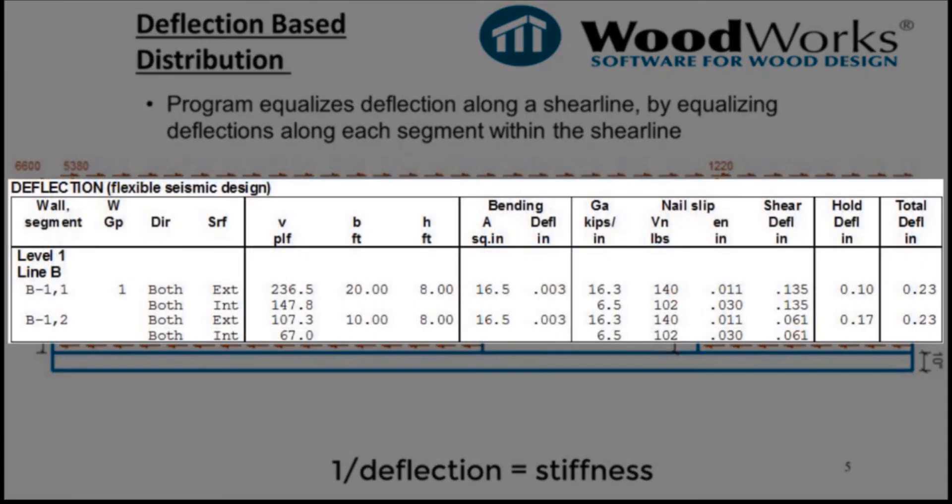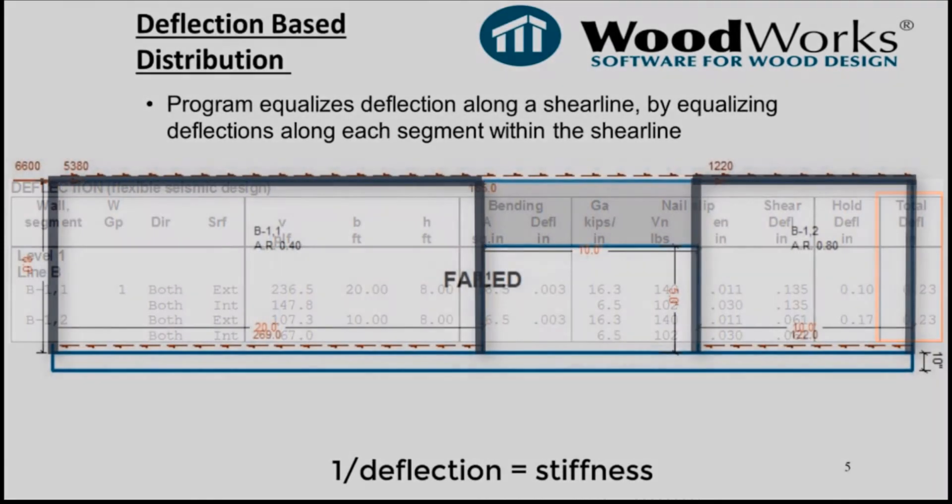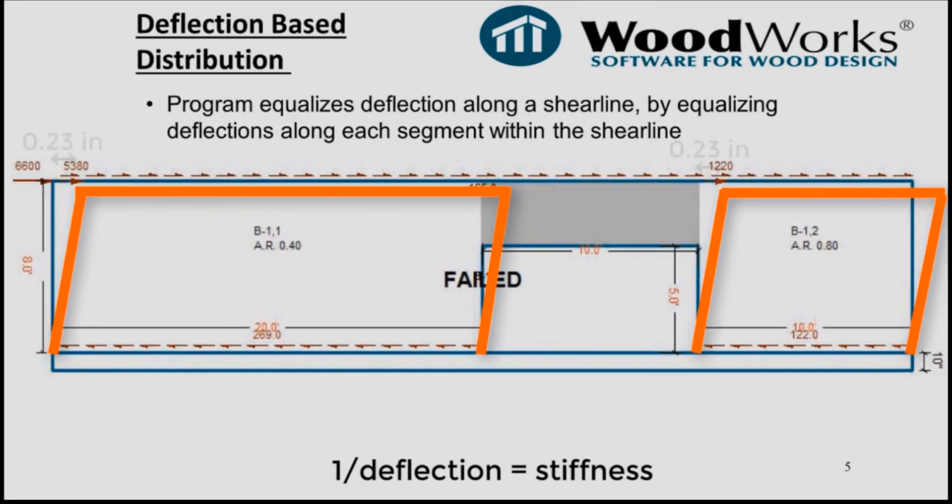As you can see, in this deflection table, using the deflection-based distribution, the total deflection for each segment is equal. The red lines in this figure represent the deflected shape of each segment. Because the deflection of the shear-resisting segments are the same for deflection-based distribution, it is often considered the more accurate approach for distributing forces along a shear line.